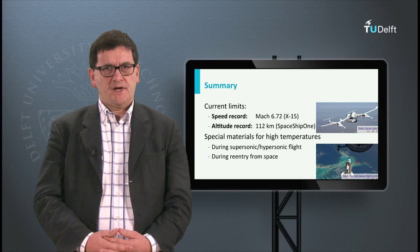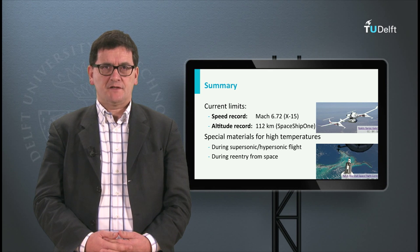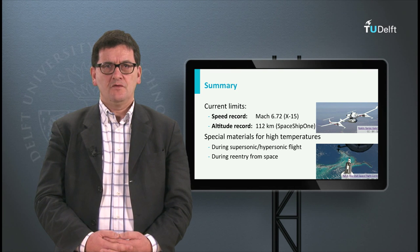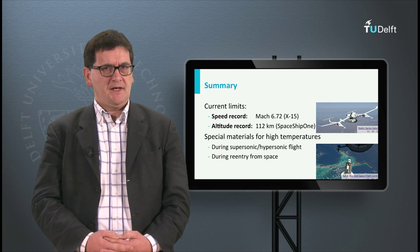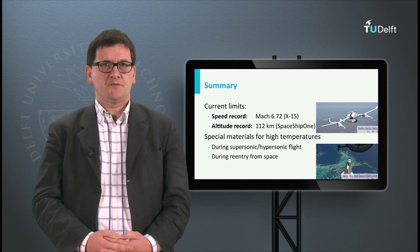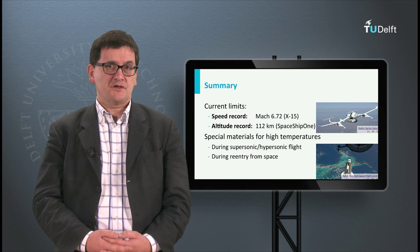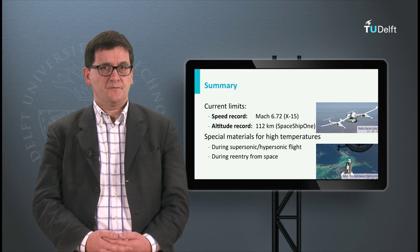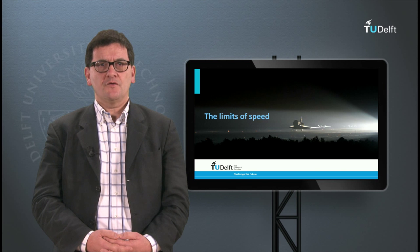So let's summarize our current records. Are there speed limits? There are to some extent, although these are not absolute limits. The fastest aircraft flew more than 7000 km per hour. The highest altitude for an aircraft is 112 km for the SpaceShipOne. We also know about the Voyager, an aircraft that flew non-stop around the world. All these records can be improved. However, if we want to push these limits, we need to think about special designs and special materials.